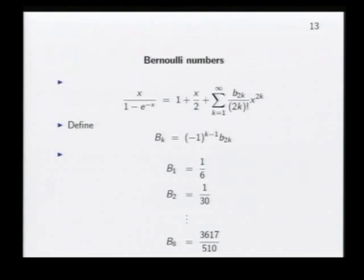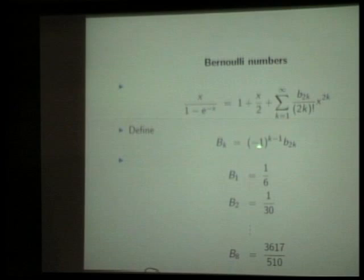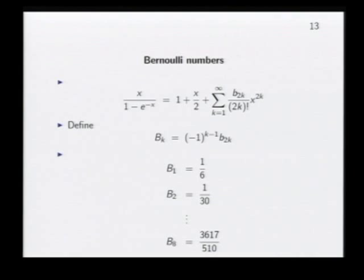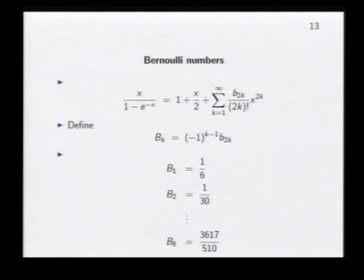The Bernoulli numbers enter this game because the generating function for the Todd polynomials, expanded out, has coefficients — apart from some factorials — equal to the Bernoulli numbers. Only one odd power appears with coefficient 1/2; the others are even powers relabeled with a sign, giving the Bernoulli numbers. These turned out, as a consequence of Hirzebruch's work, to play a very important role in topology — the first real link between topology and number theory. The Bernoulli numbers are everywhere present in modern topology.